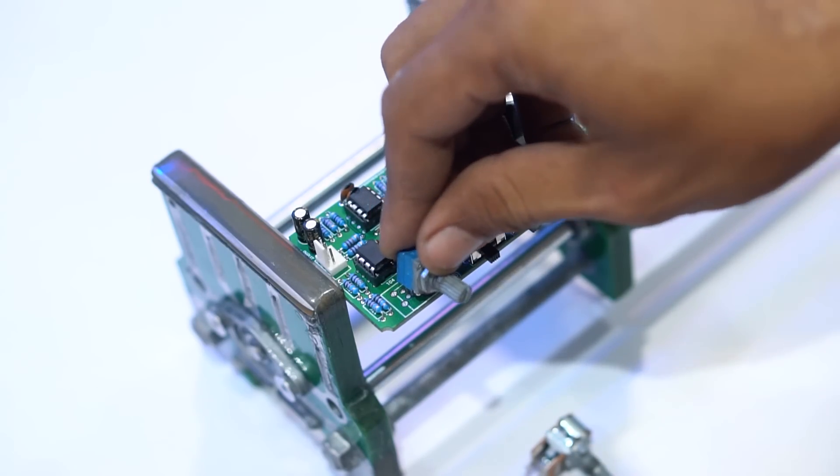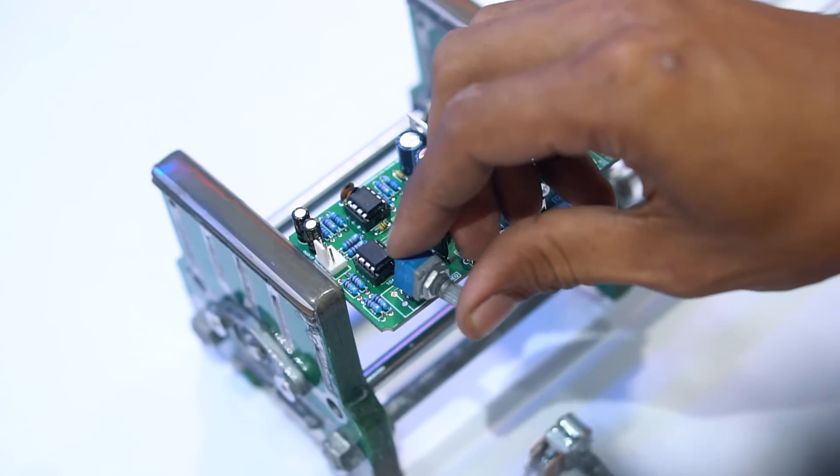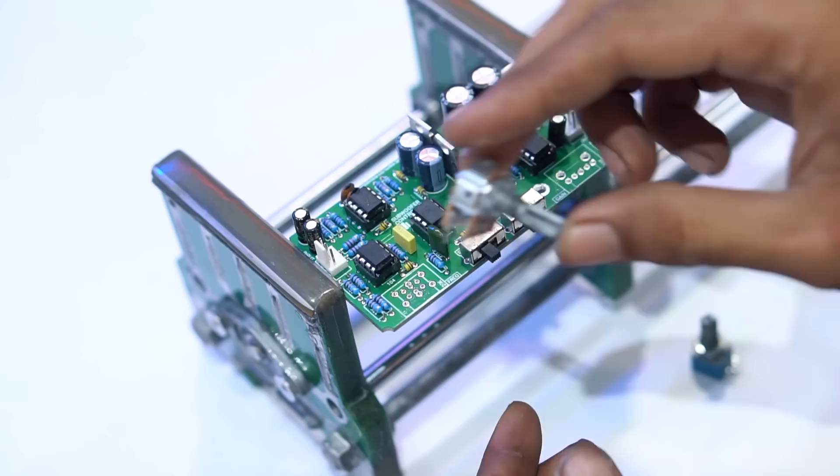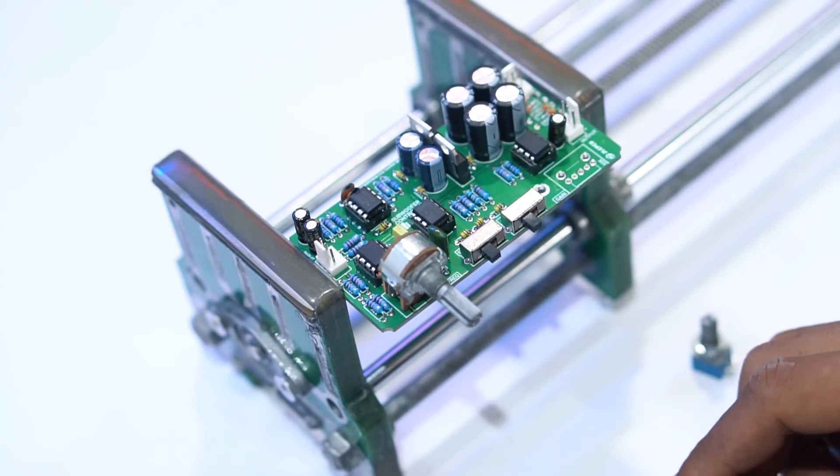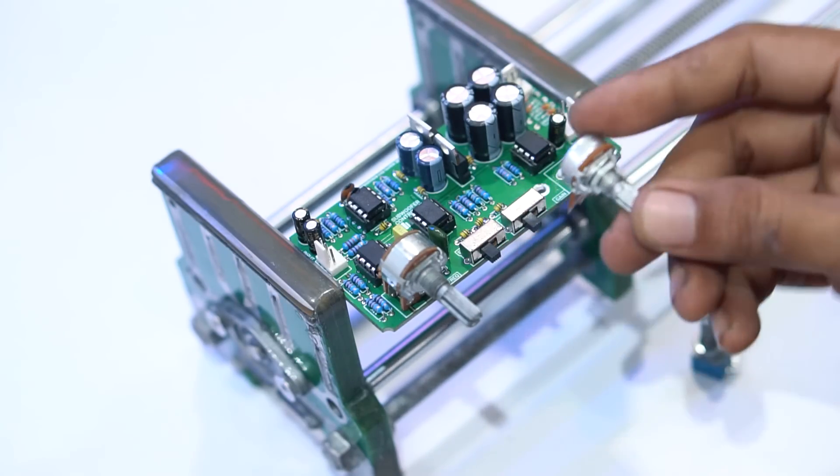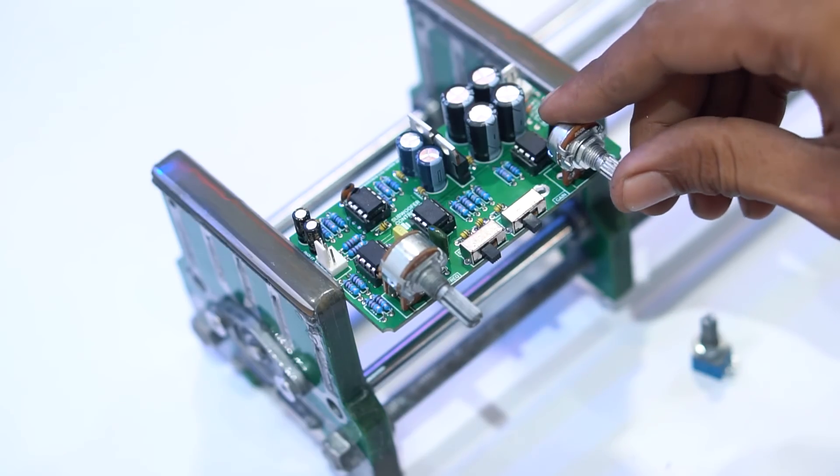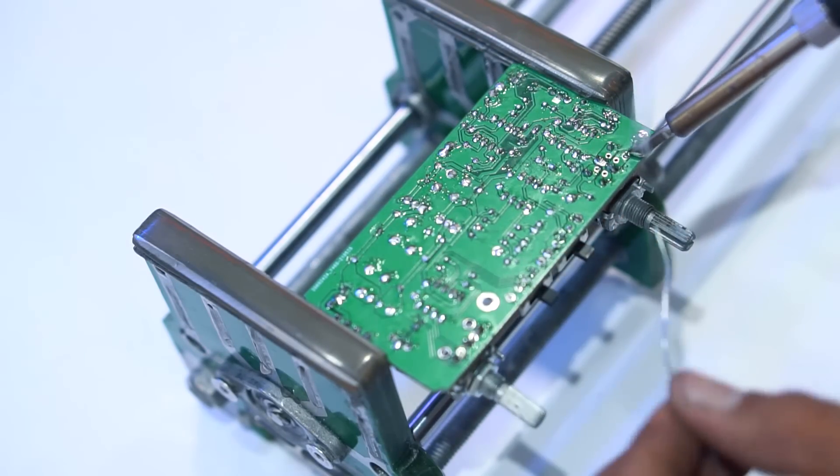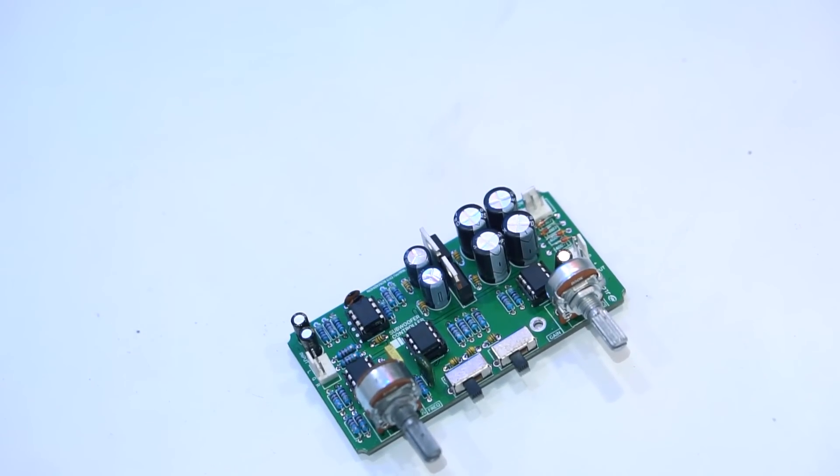For the potentiometers, you can use the slot model, the small one like this, or the standard model like this. So you can use two models of potentiometers, but make sure the values match what is printed on the PCB. Okay, the subwoofer control kit is done and ready to test.